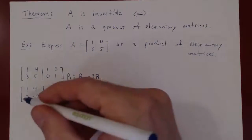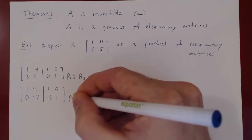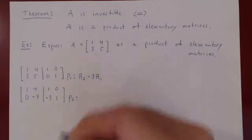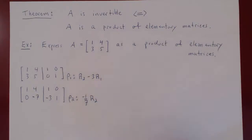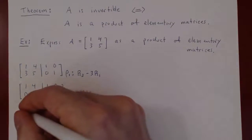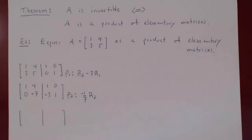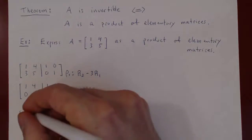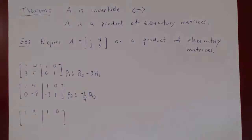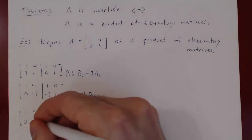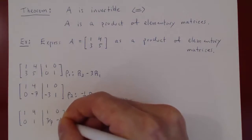Now let's multiply row 2 by negative 1 over 7. This is our second row operation. We are only changing row 2, so recopy the first row: 1, 4, 1, 0. Multiplying the second row by negative 1 over 7 gives us: 0, 1, 3/7, negative 1/7.